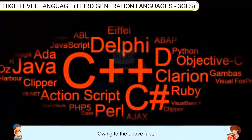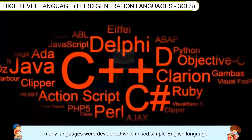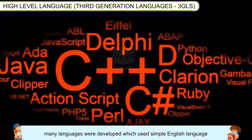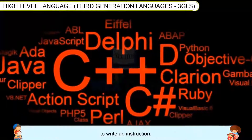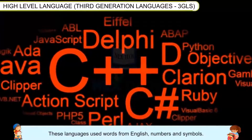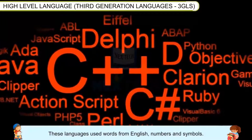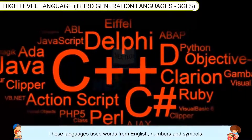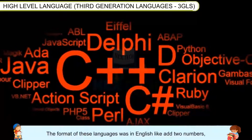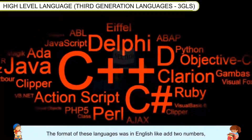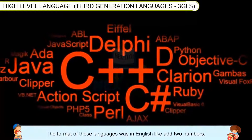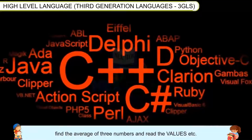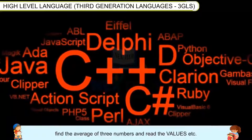Owing to the above fact, many languages were developed which used simple English language to write an instruction. These languages used words from English, numbers and symbols. The format of these languages was in English, like: add two numbers, find the average of three numbers, and read the values, etc.